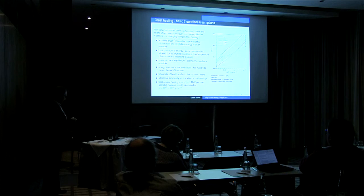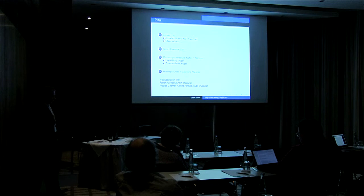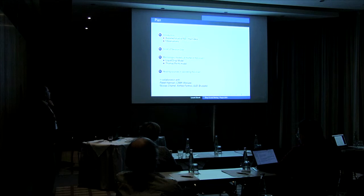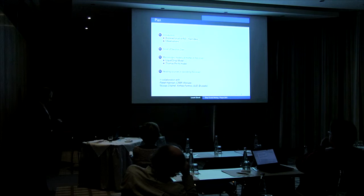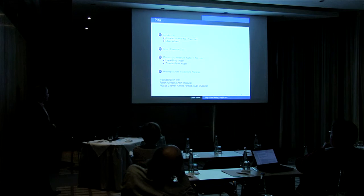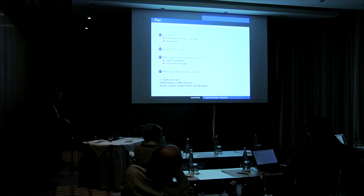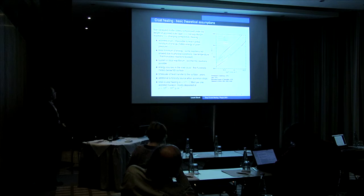I will very shortly describe the crust of neutron stars and how it looks, then briefly describe two microscopic models: the liquid drop model, which was used for many years for calculating crustal heating and crust properties of neutron stars, and then the Thomas-Fermi model, which is new. This Thomas-Fermi model uses the equation of state by Nicola Chamel and Anthea Fantina from Brussels, in collaboration with Pawel Haensel from Poland. Then I will present the consequences of the heating sources and compare these two models.